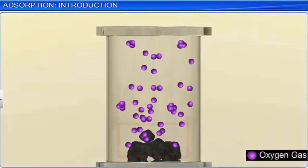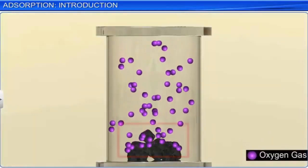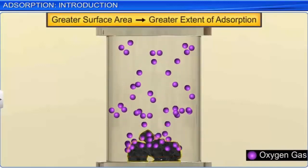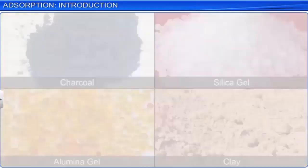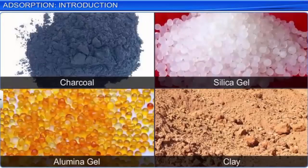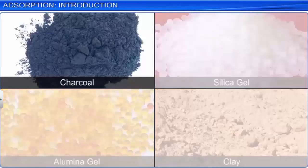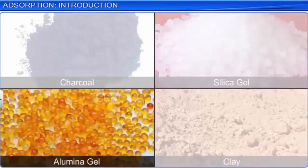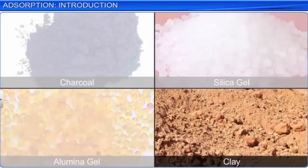It is important to note that adsorption is a surface phenomenon. Hence, greater the surface area of the adsorbent, greater is the extent of adsorption. Thus, finely divided metals and substances with porous structure are good adsorbents as they provide large surface area. Charcoal, silica gel, alumina gel, and clay act as excellent adsorbents.